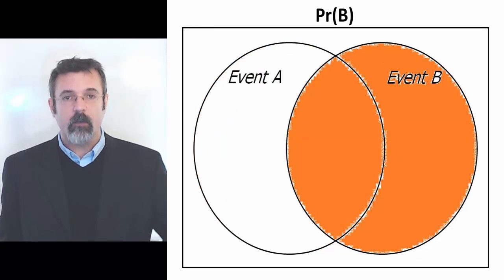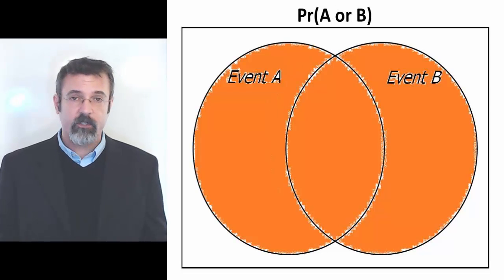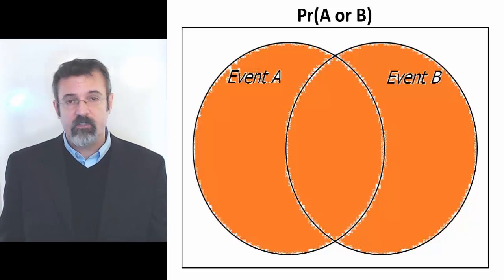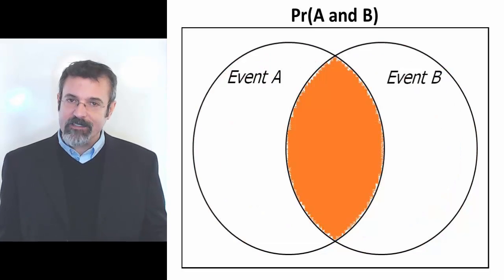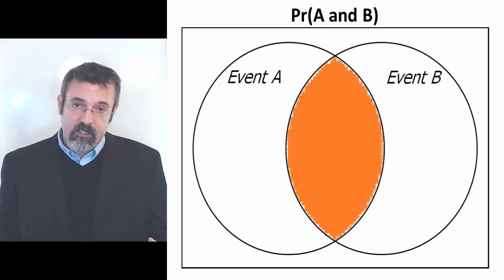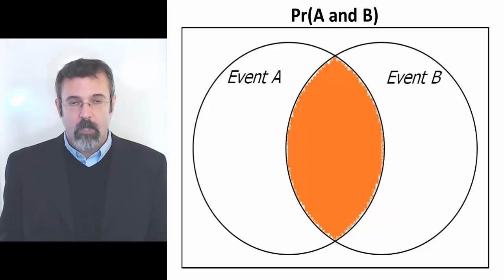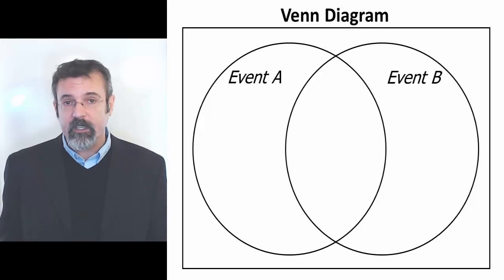When we talk about the probability of Event B occurring, we are talking about the area within the Event B circle. The disjoint probability of Event A or Event B occurring is all of the area inside both circles A and B. The joint probability of Event A and Event B occurring is the area that exists within both Circle A and Circle B at the same time. With the Venn diagram we can talk about all sorts of other more complicated probabilities.